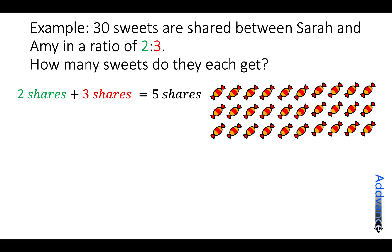Sarah getting 2 shares and Amy getting 3 shares, that is a total of 5 shares. And we're going to split the 30 sweets into 5 equal shares. 30 divided by 5 gives us 6 sweets in 1 share.